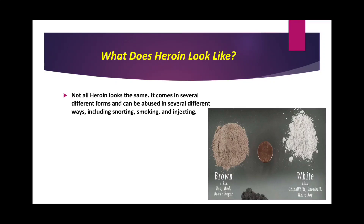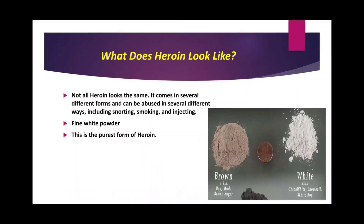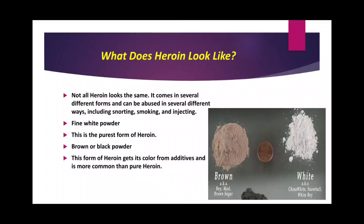Not all heroin looks the same — it comes in several different forms and can be abused in several different ways, including snorting, smoking, and injecting. There is a wide variety: fine white powder is the purest form; brown or black powder gets its color from additives and is more common than pure heroin; and black tar heroin comes as a black sticky gel.